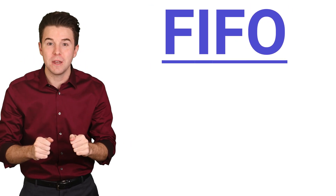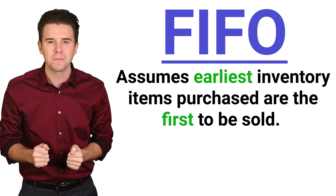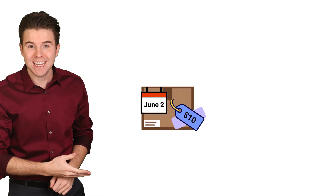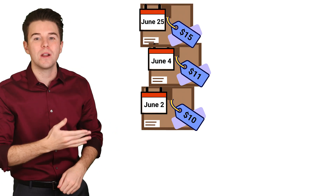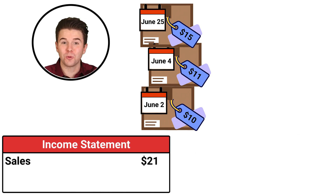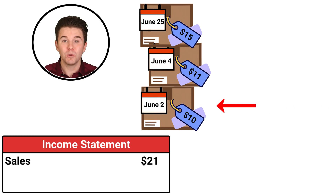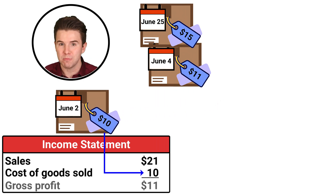The first in first out, or FIFO, inventory method assumes that the earliest inventory items purchased are the first to be sold. For example, let's say a company bought three identical units of inventory: one unit on June 2nd for $10, one unit on the 4th for $11, and one unit on the 25th for $15. On June 28th, we sold one unit for $21. Using FIFO, the first unit purchased, which was on June 2nd for $10, is reported as cost of goods sold on the income statement.